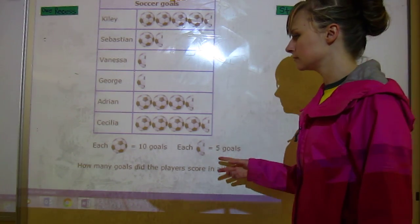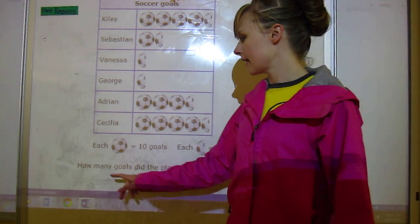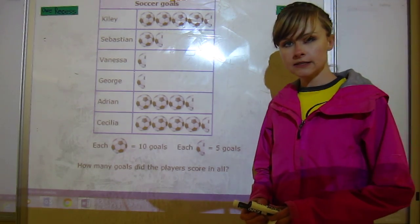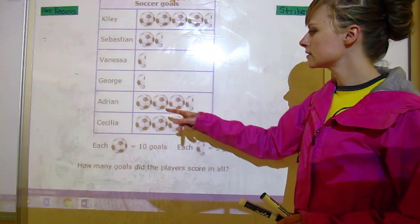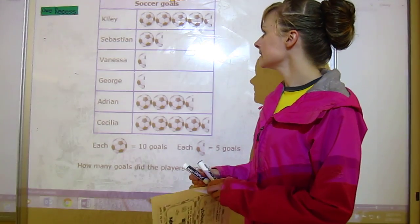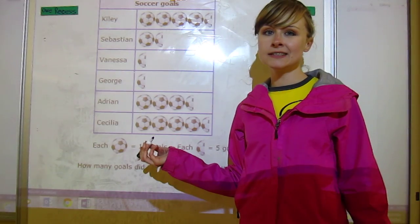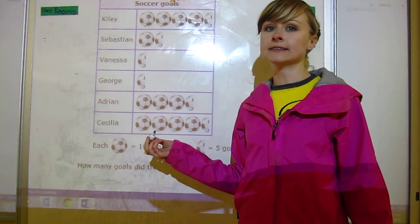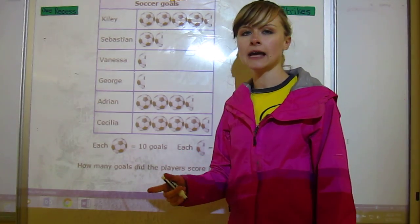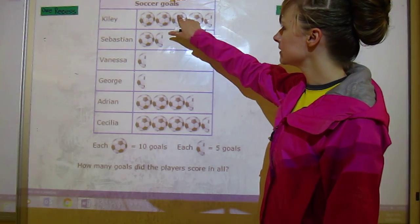The question is how many goals did the players score in all. So what we need to do in this case is figure out how many each one scored and then add it all up. I'm guessing that this would be in a season, not in a game, because this is a lot of goals. So we can start skip counting by tens. We've got ten, twenty, thirty, forty and then there's five, so Kylie did forty-five goals.